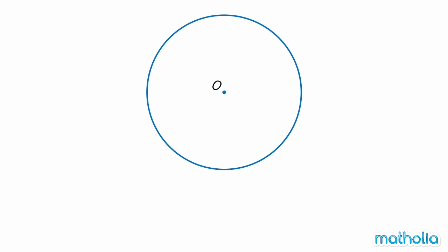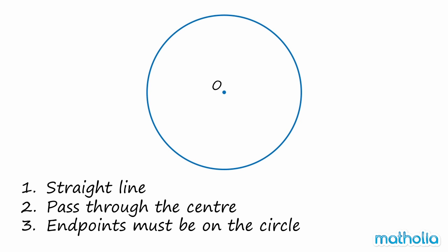The diameter of a circle can be defined by three properties. One, it must be a straight line. Two, it must pass through the center of the circle. And three, the end points must be on the circle.